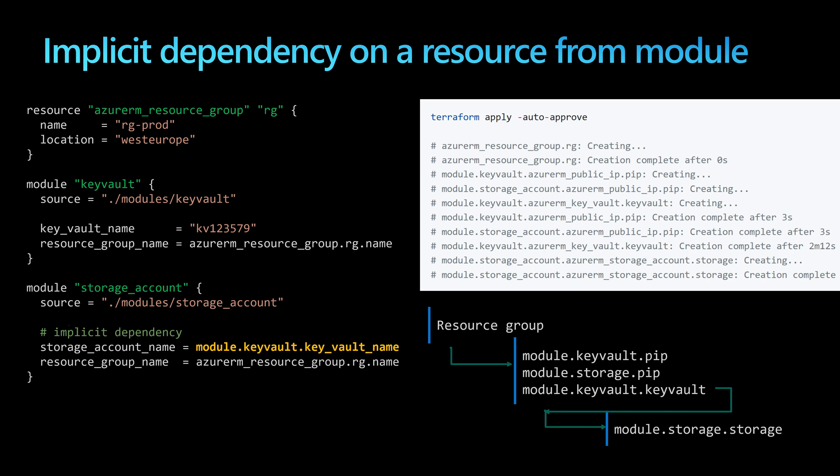This tells Terraform there is an implicit dependency to a resource from the first module. When running Terraform apply, it first creates the resource group, then creates three resources at the same time in parallel — the key vault, the storage, and the public IPs. Because the storage account depends on the key vault, it waits until the key vault is finished, and then starts creating the storage account.